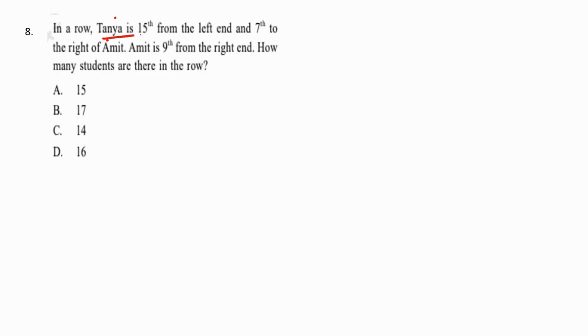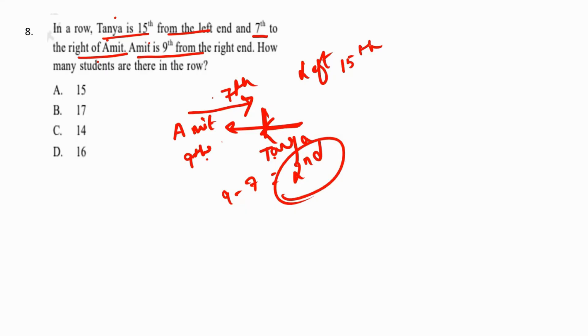In a row, Tanya is 15th from the left and seventh to the right of Amit. Amit is ninth from the right. If Amit is ninth from the right and Tanya is seventh to his right, then Tanya is second from the right. Using the formula: position from both ends minus one, we get 15 plus 2 equals 17 minus 1 equals 16 total students in the row. Option C.